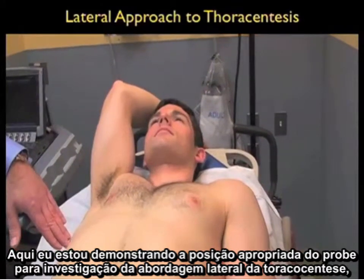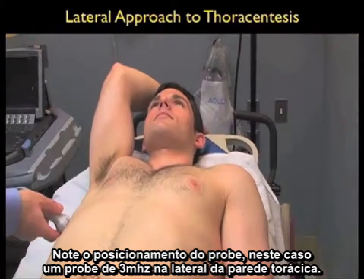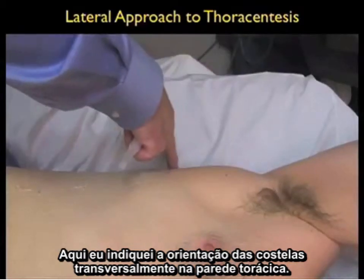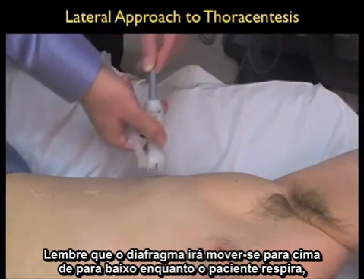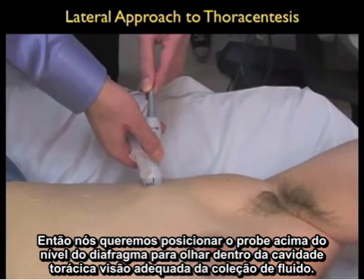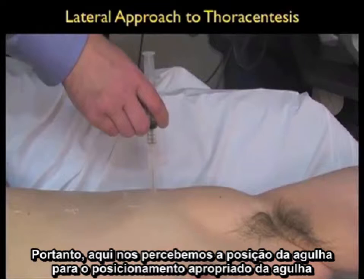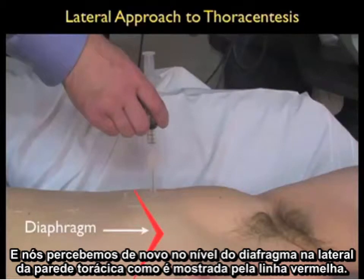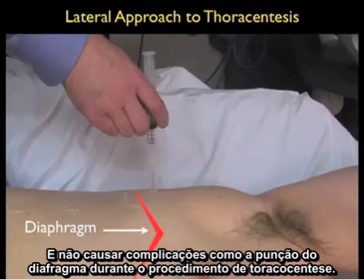Here I'm demonstrating the appropriate probe position to investigate for the lateral approach to thoracentesis, this time on the right chest, using the three megahertz probe on the lateral chest wall, right above the level of the diaphragm to look for a pleural effusion. I'll indicate the orientation of the ribs across the lateral chest wall and the orientation of the diaphragm. Remember the diaphragm moves up and down as the patient breathes, so we want to place the probe above the diaphragm to look into the thoracic cavity. The needle must be positioned above the diaphragm on the lateral chest wall so it can safely enter the thoracic cavity and avoid complications such as puncture of the diaphragm.